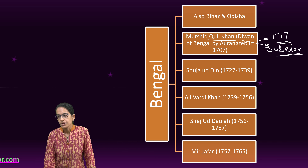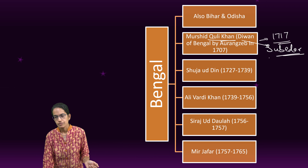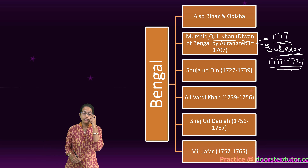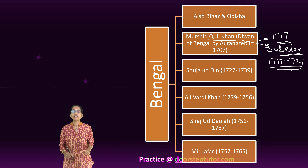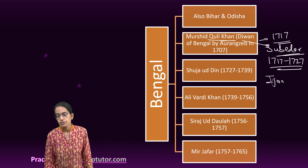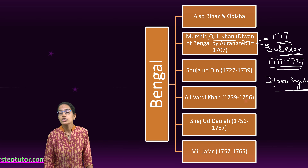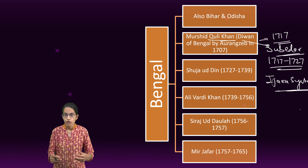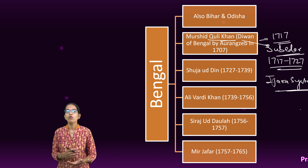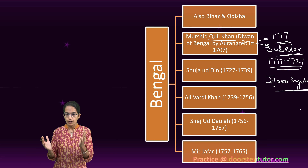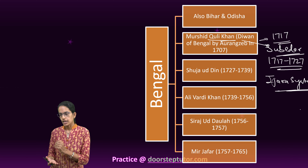Murshid Kuli Khan became the subedar and finally the governor of Bengal. He remained governor from 1717 to 1727. He is known for numerous reforms, specifically in the field of revenue — the Ijtara system was introduced. There was reorganization of Zamindari, which was considered a very good step, and people recognized him for his efforts in reorganizing the Zamindari system in Bengal.